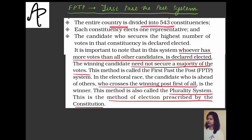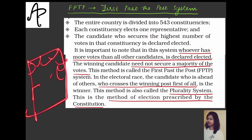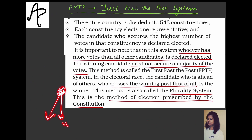In FPTP, the entire country is divided into 543 constituencies — small territorial areas. From each constituency, one representative is elected. The candidate who secures the highest number of votes in that constituency is elected. So if four candidates A, B, C, and D contest from a constituency and D wins, it means D got more votes than A, B, and C.